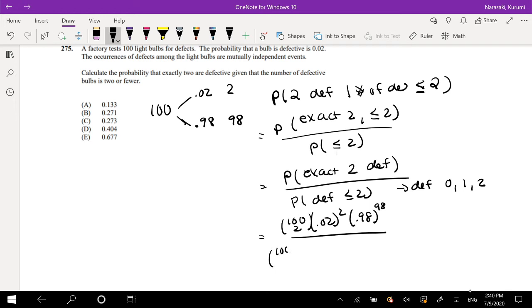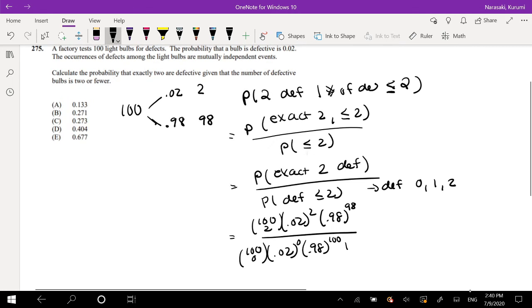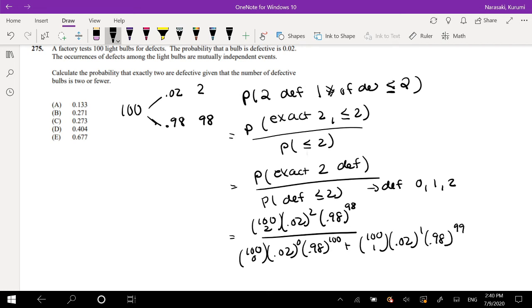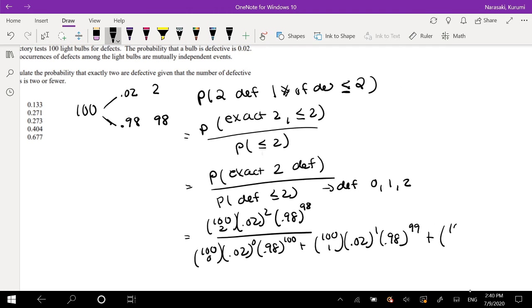So we can just do that. So this is 100 choose 0, 0.02 to the 0, times 0.98 to the 100, plus 100 choose 1, 0.02 to the 1, 0.98 to the 99, plus 100 choose 2, 0.02 to the 2, and 0.98 to the 98.